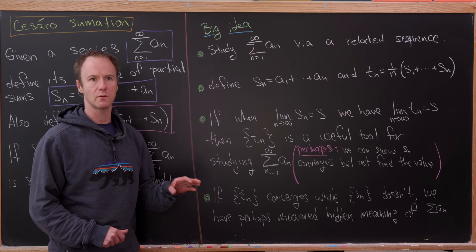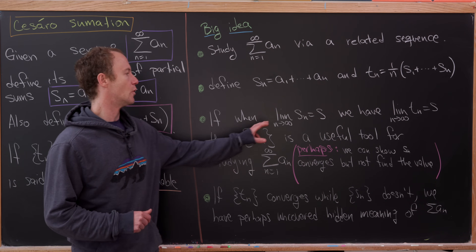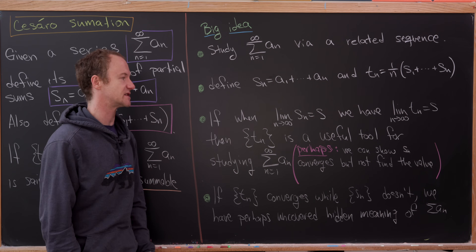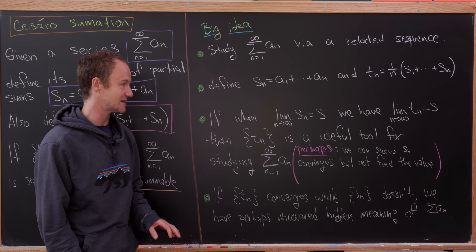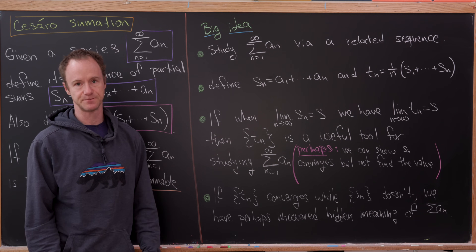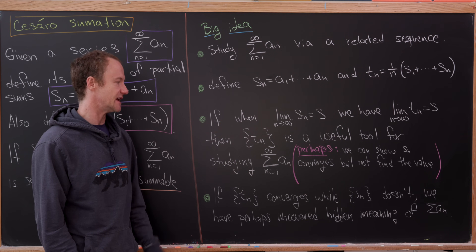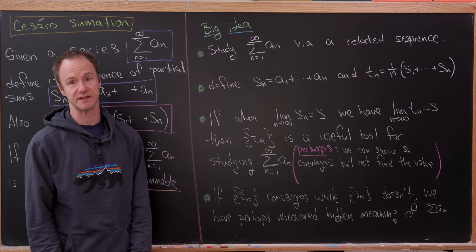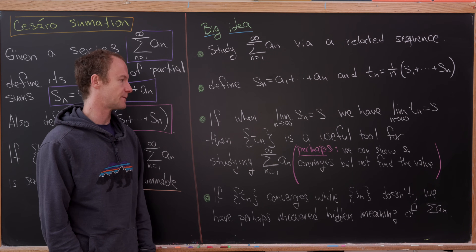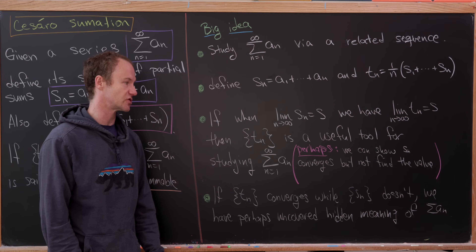Hopefully, this new sequence T sub n will allow us a different way of studying our original series. It would be nice if when the limit of the partial sums equals S — in other words, this series converges to a sum S — then the limit of the T sub n terms also equals S. In that case, T sub n is a useful tool for studying our series. We might use it when we can show that the sequence of partial sums converges but can't find its value.